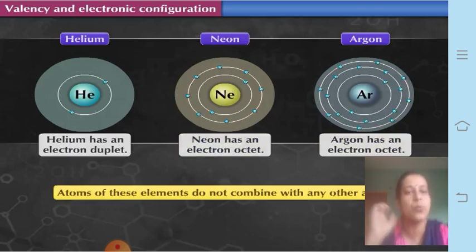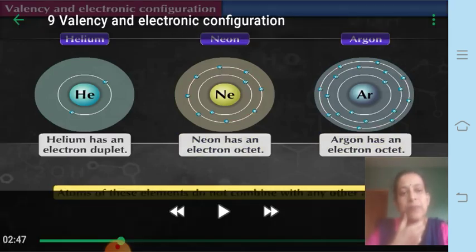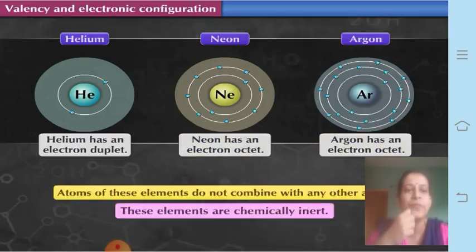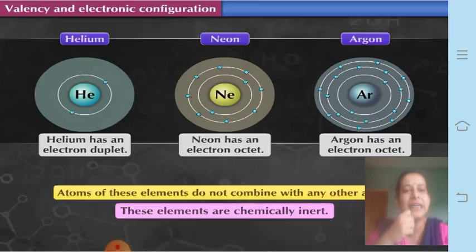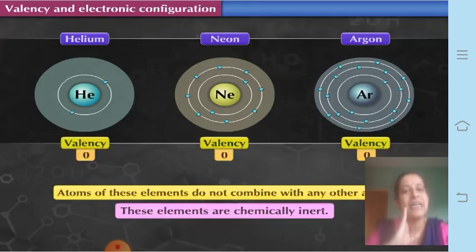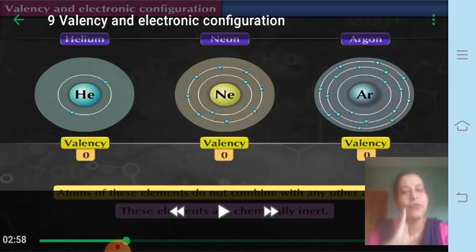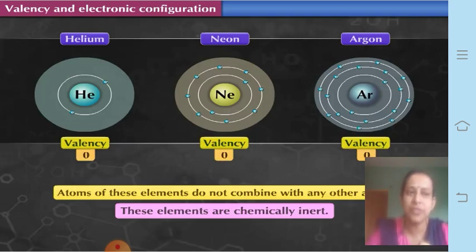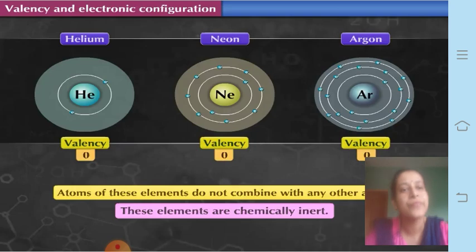Therefore they are called inert gases. The word 'inert' means inactive — because they do not form any compound, they are chemically inert. Since they are inert and do not give or take any electron, we say that their valency is zero. Remember: inert gases only have valency equal to zero because they do not form any compound.